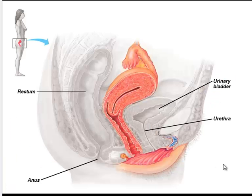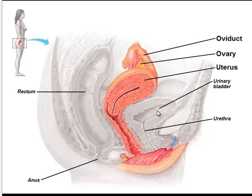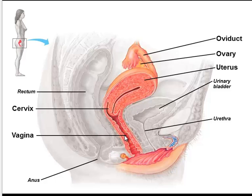Now let's take a look at these structures from the side. Here is the woman's front or anterior, here is the woman's rear or posterior. The ovary is located towards the center with the oviduct adjacent, and then here we have the uterus in between the bladder and the rectum. There's the cervix, here's the vagina, and you can see that the opening for the vagina is in between the anus and the urethra.